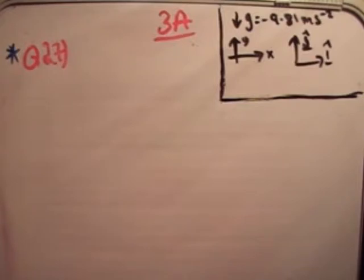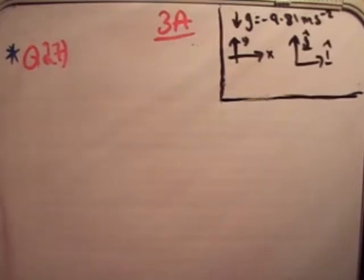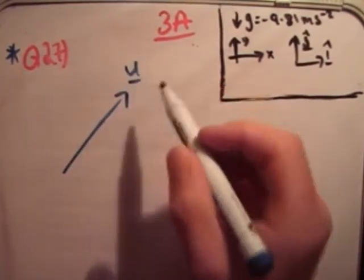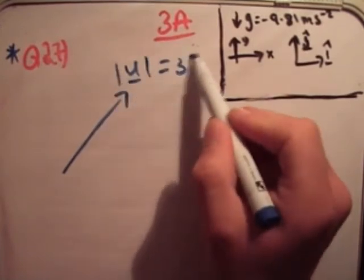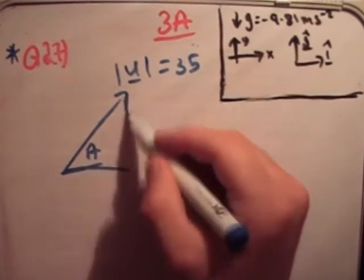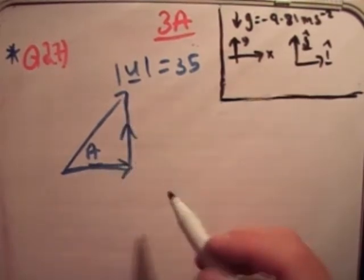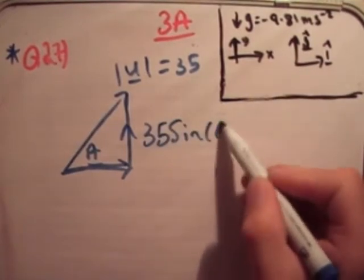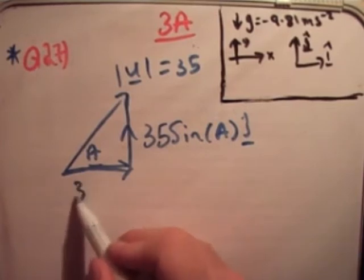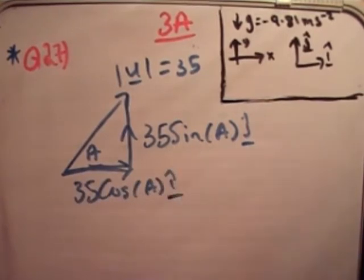As with question 26, I'm not going to write out all the bits and pieces — more of a summary. We're told the thing has a speed of 35 meters per second. The magnitude of u is equal to 35 and the angle is a. When we resolve it we get two vectors: 35 sin a j-hat and 35 cos a i-hat.